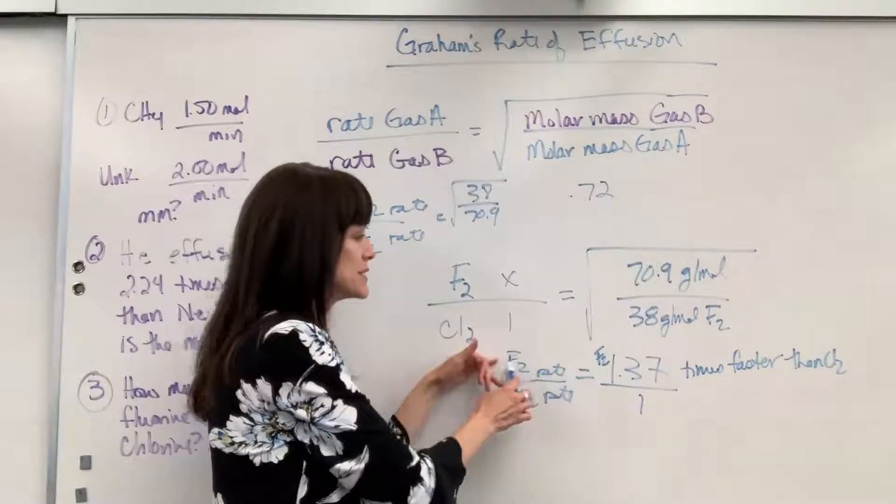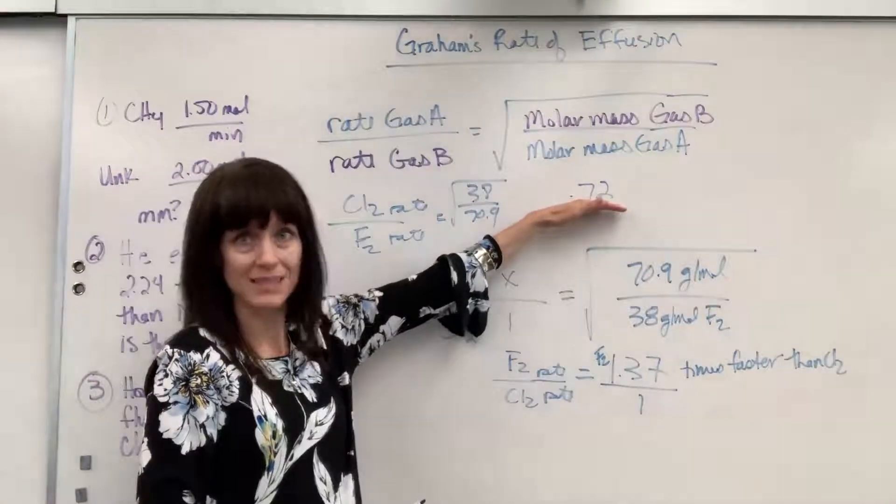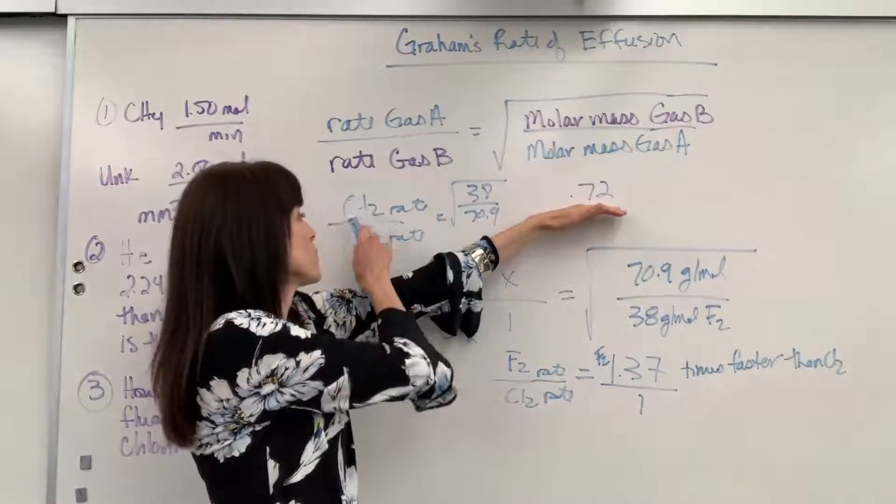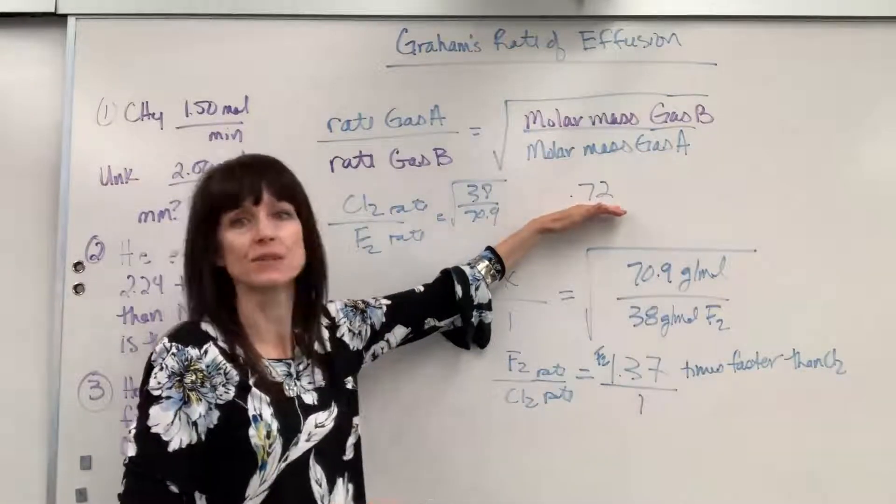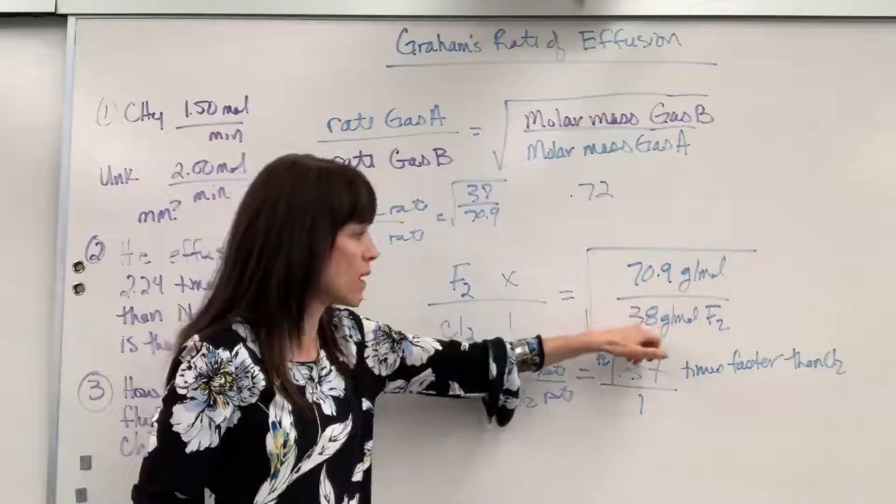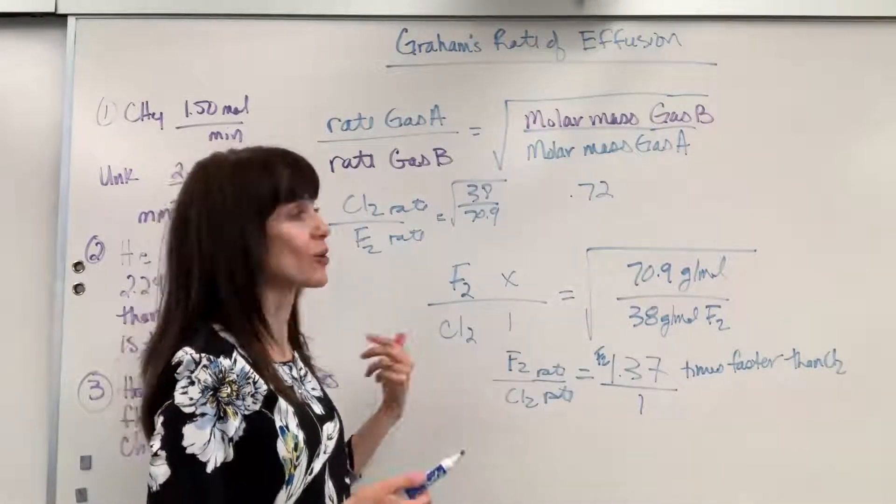If the numerator is less than 1, then that means the rate of the gas in the numerator is slower. And you can double check that. It will be easy because the smallest molar mass is going to be the one that goes the fastest.